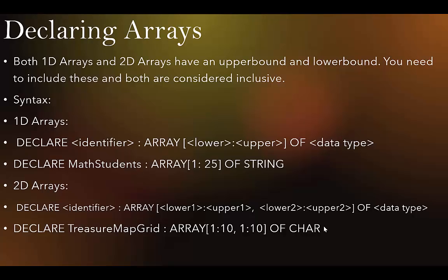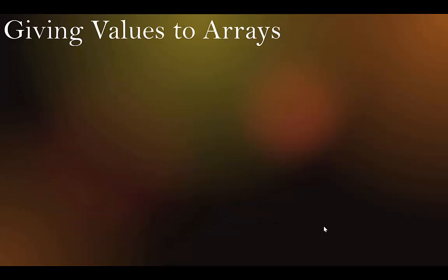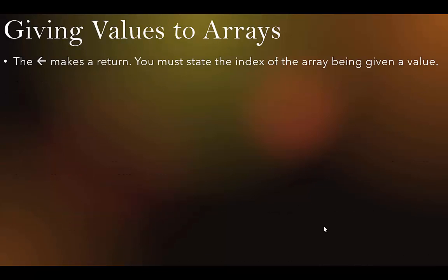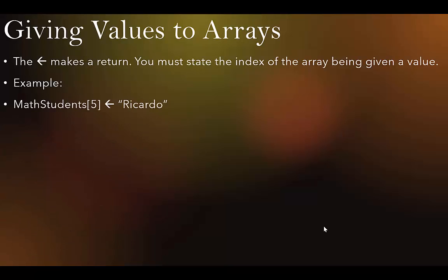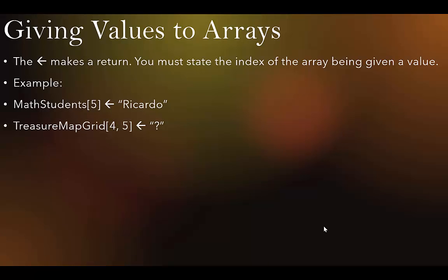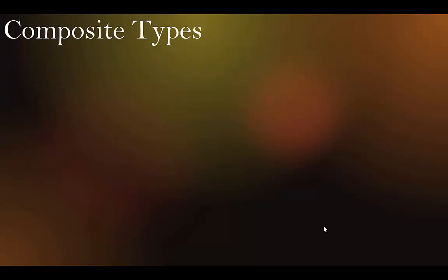We do have a 2D array treasure hunting program in both Java and VB if you want to check it out. To give a value to an array, use the left-hand arrow and state the index being assigned. For example: MathStudents[5] ← 'Ricardo', TreasureMapGrid[4,5] ← '?'. That takes care of arrays.